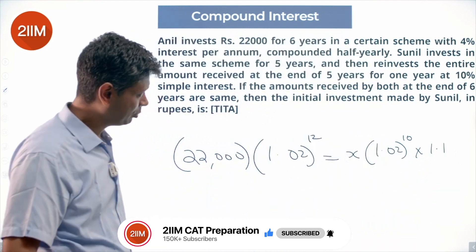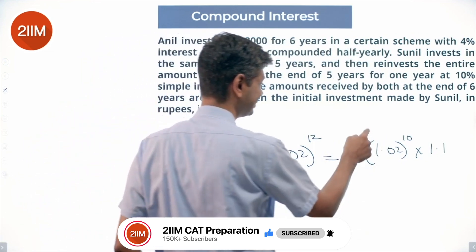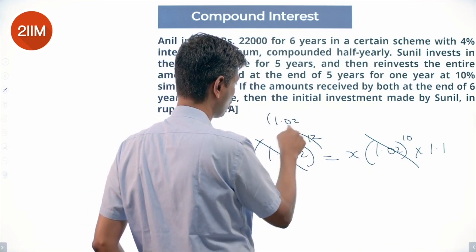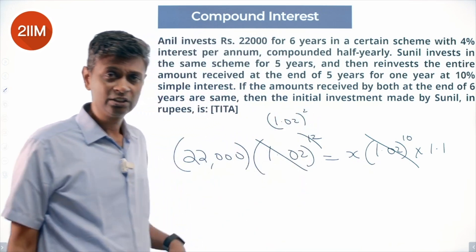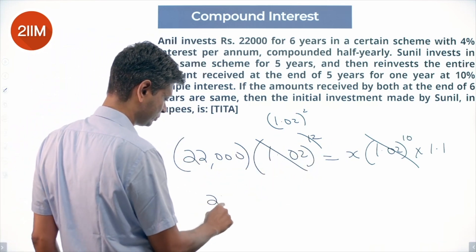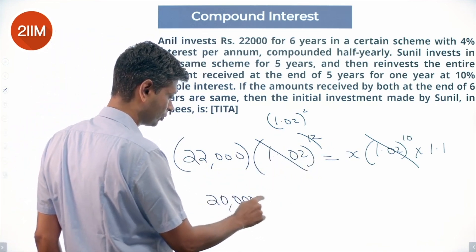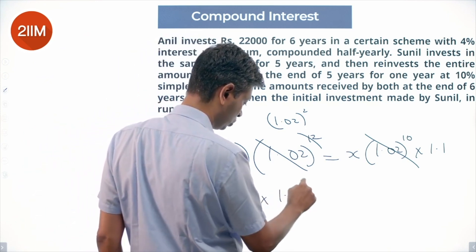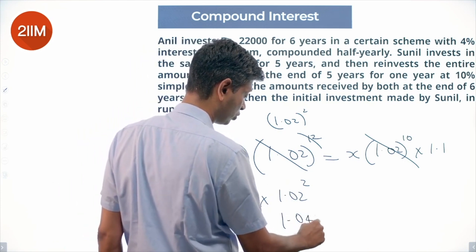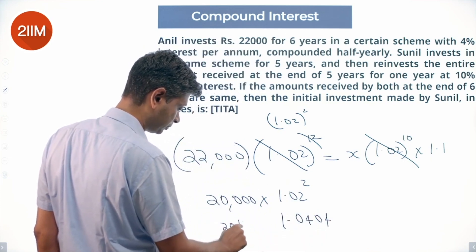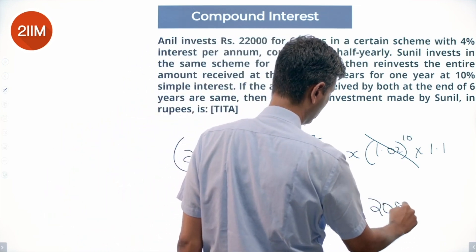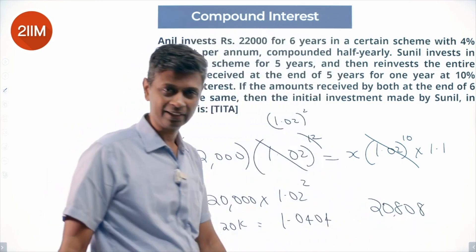Setting these two equal: X × 1.02^10 × 1.1 = 22,000 × 1.02^12. Cancelling 1.02^10 from both sides leaves 1.02^2 on the right. So X = (22,000 / 1.1) × 1.02^2 = 20,000 × 1.0404 = 20,808.